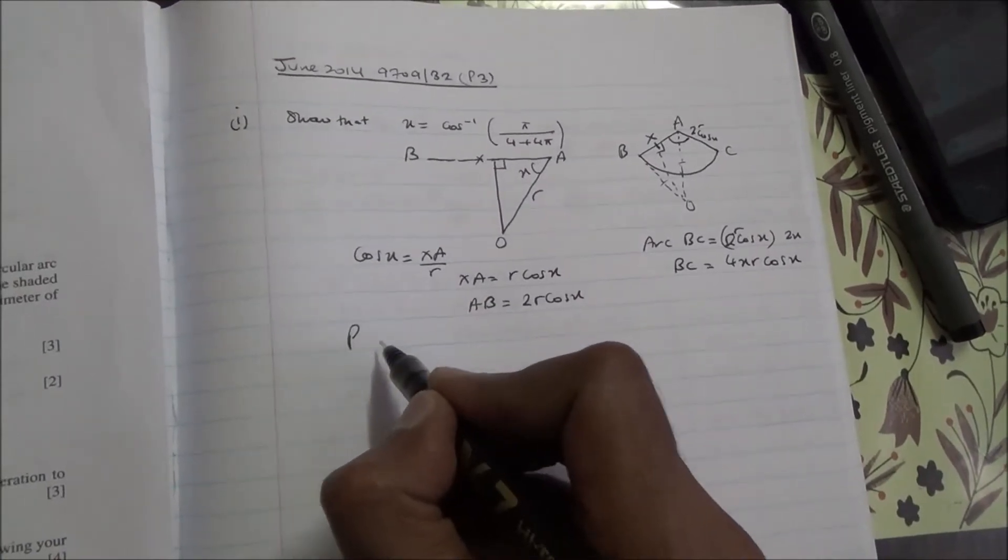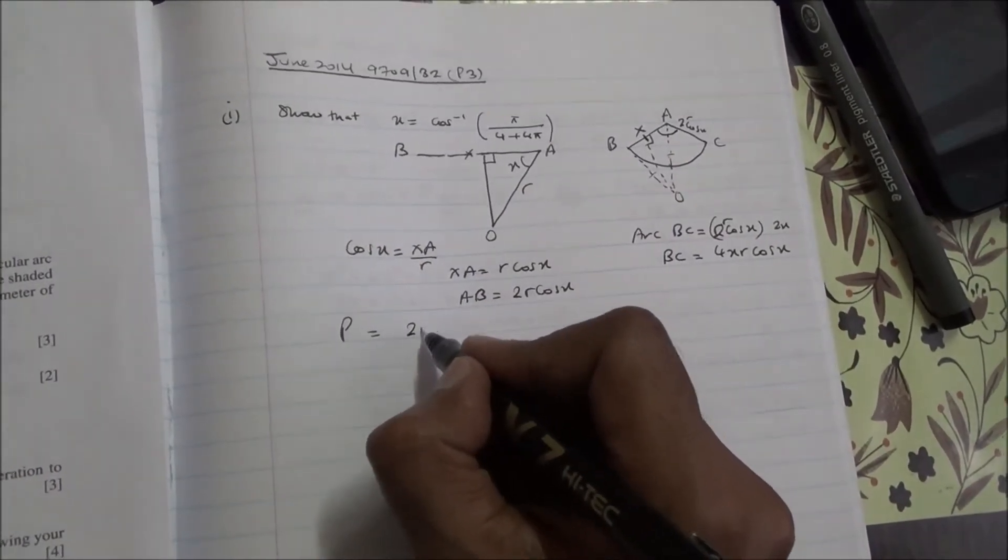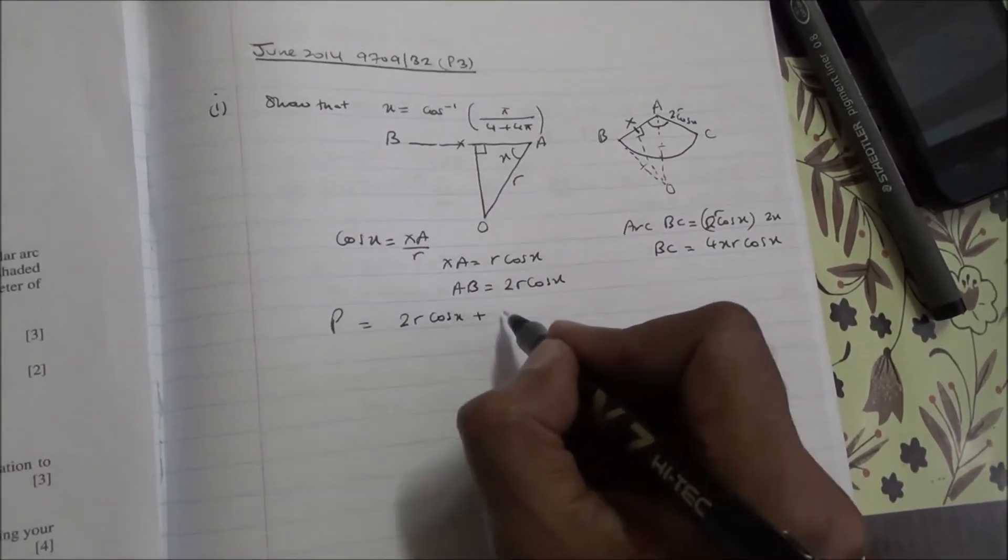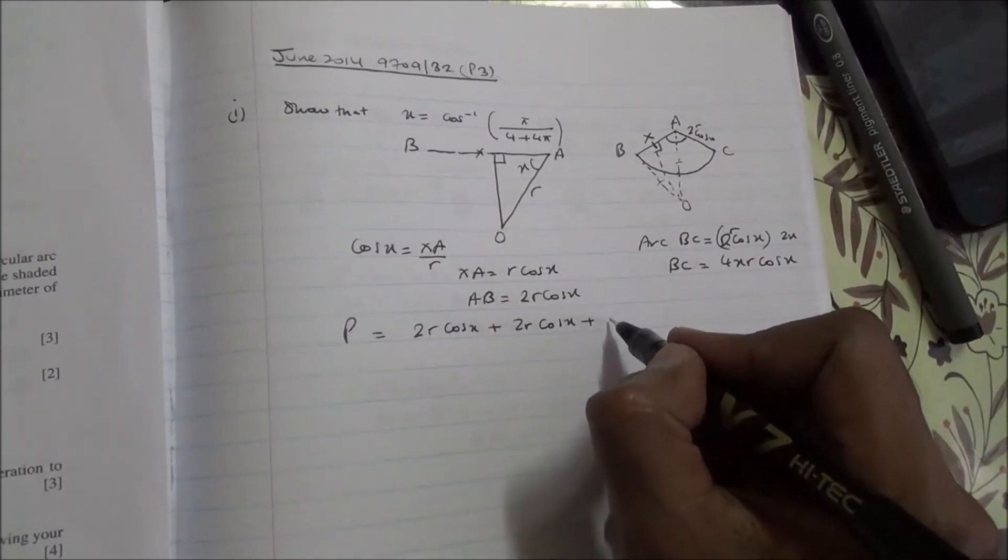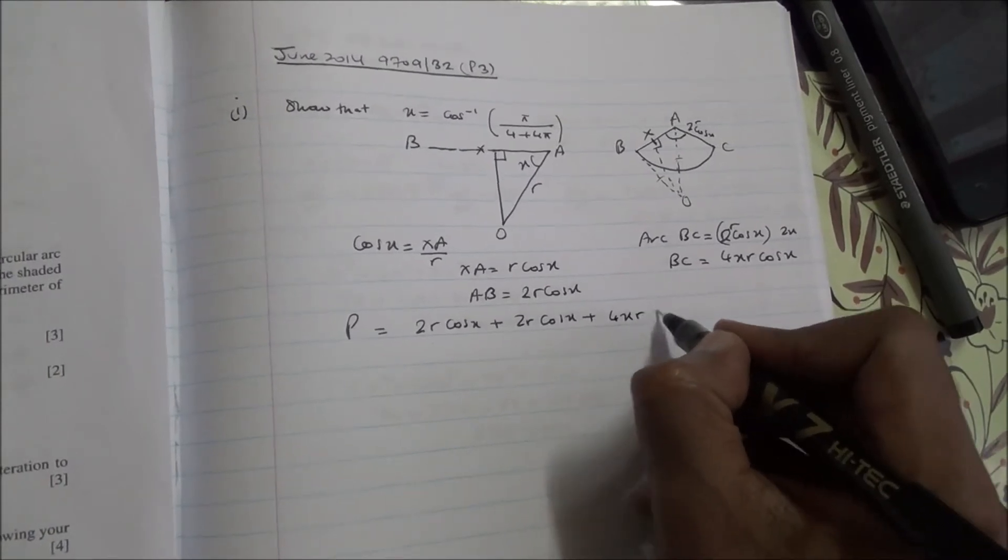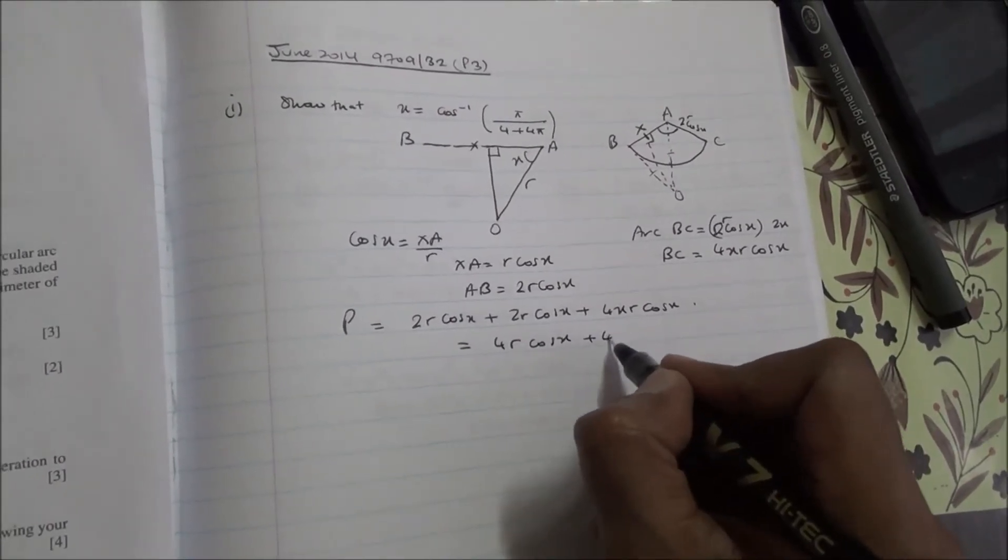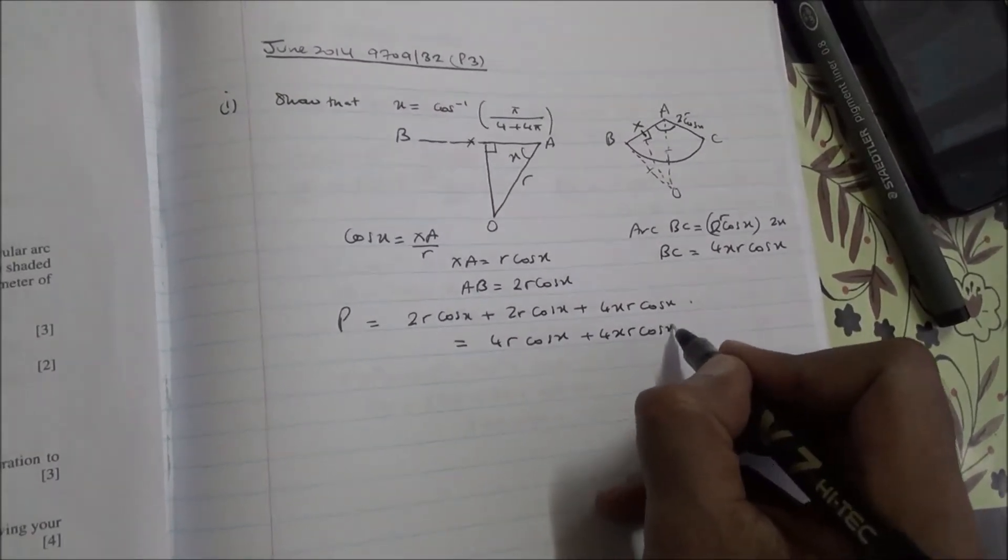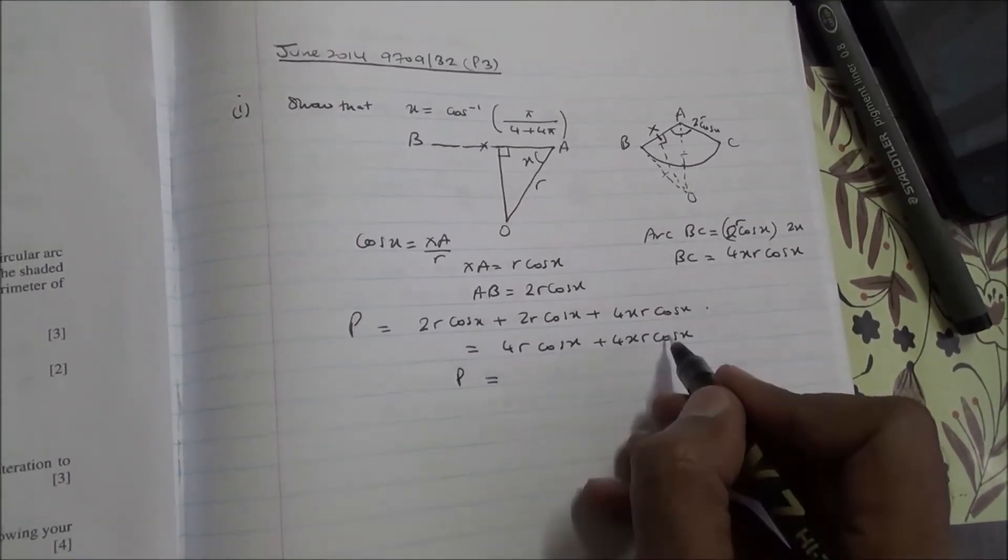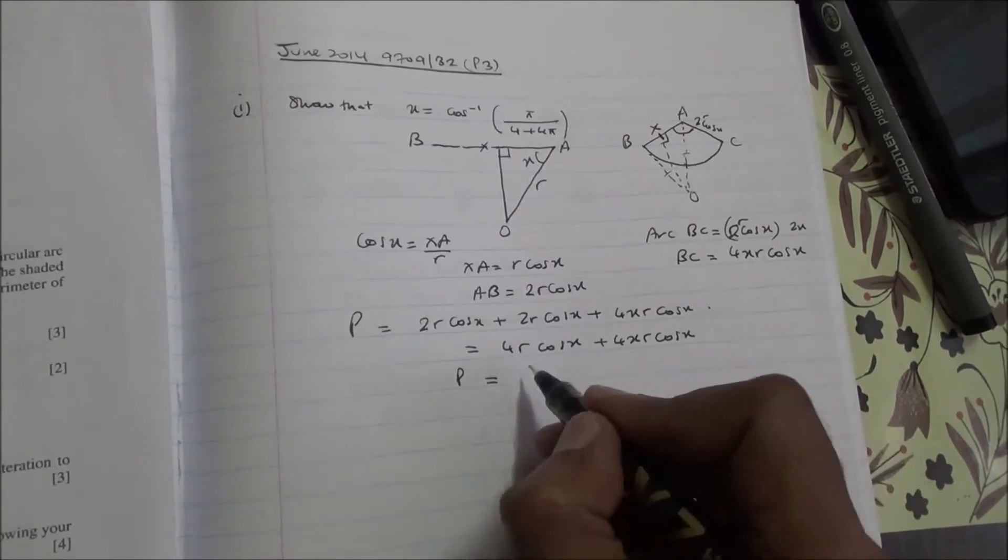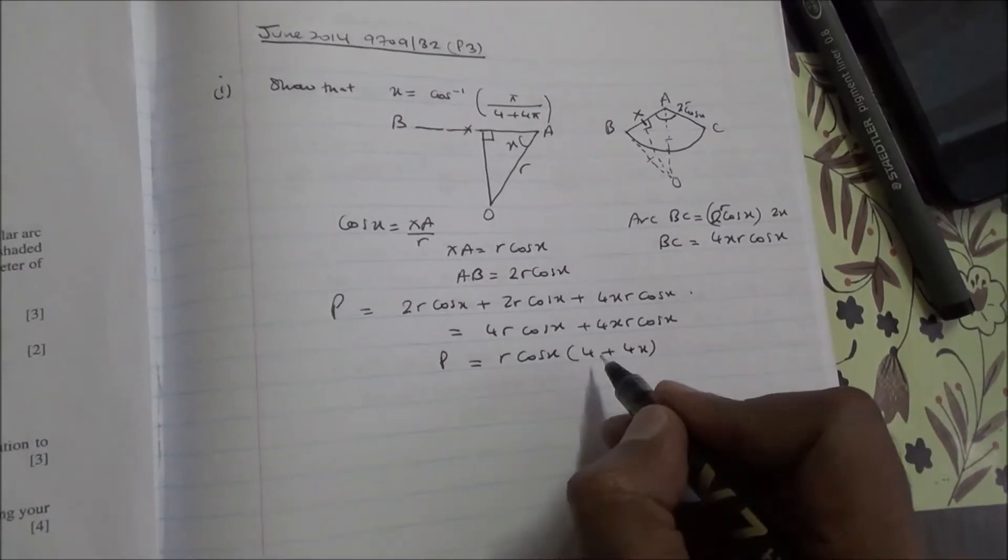The perimeter of the shaded region is this radius plus that radius, which is 2R cos of X, plus 2R cos of X, plus BC. The arc BC is 4XR cos of X. That's going to be 4R cos of X plus 4XR cos of X. Cos of X is common, R is common, so R cos of X in brackets, we've got 4 plus 4X. So that's the perimeter.